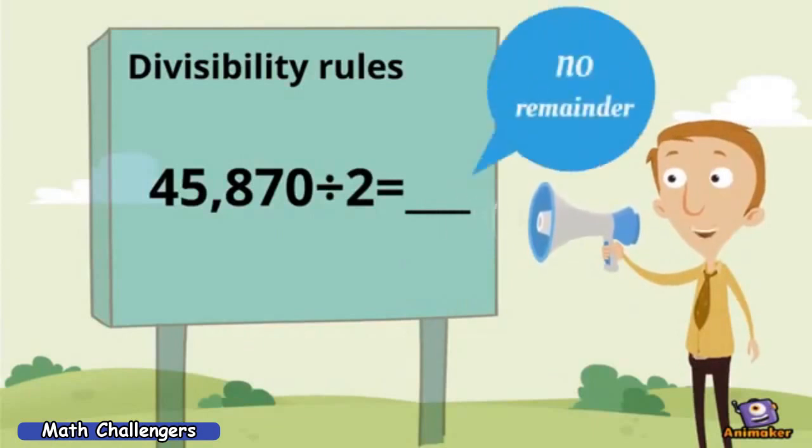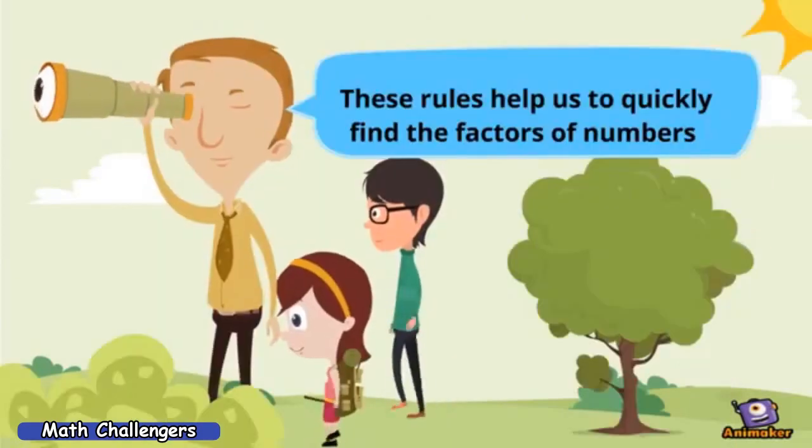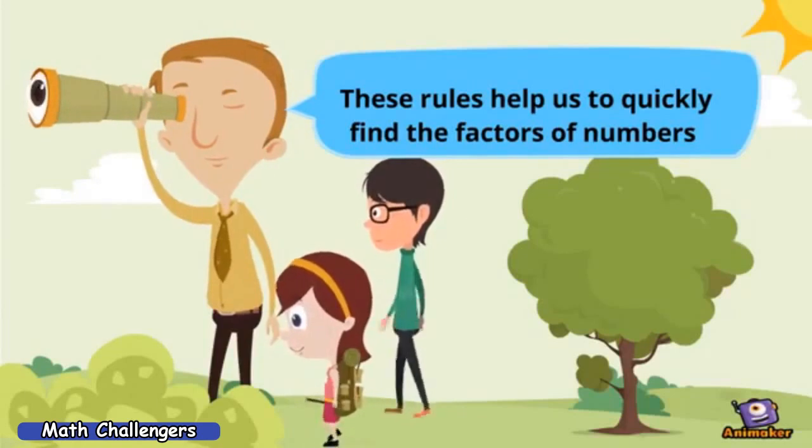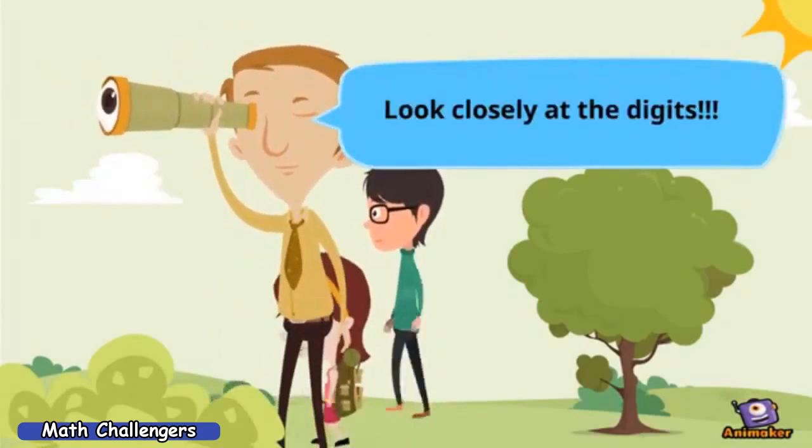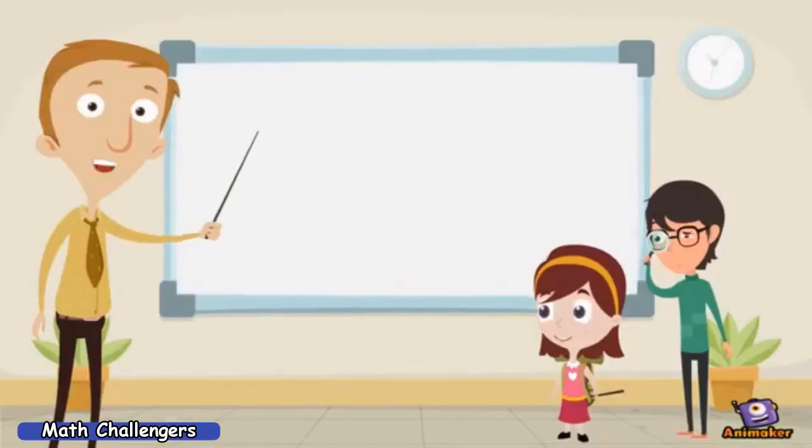Divisibility rules help us quickly find the factors of numbers without carrying out the actual division. All we need to do is to look closely at the digits.